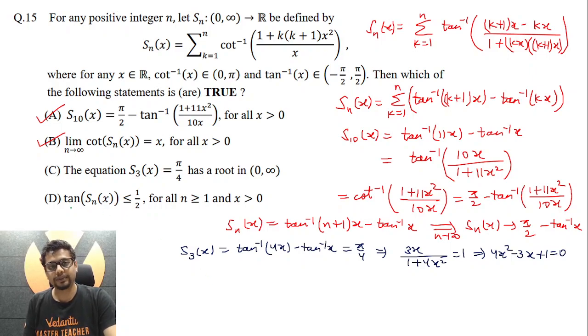Now coming to D, we have to comment upon tan of S_n(x) being less than or equal to 1/2 or not for all n greater than or equal to 1 and x greater than 0. Now if n is greater than or equal to 1, I can even take n to be tending to infinity. In which case, S_n(x), which we have already found out, tends to pi by 2 minus tan inverse x. So what about tan of S_n(x)? It essentially becomes tan of (pi by 2 minus tan inverse x), or you may say tan of cot inverse x, which essentially becomes 1 by x.